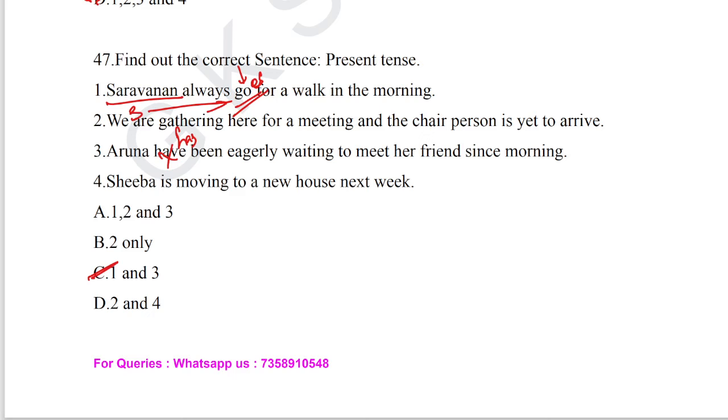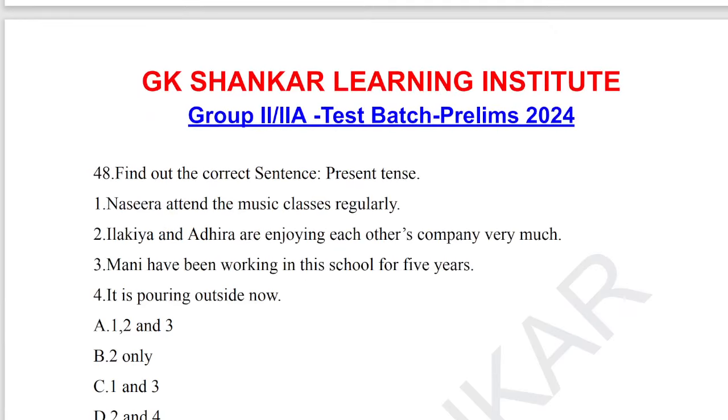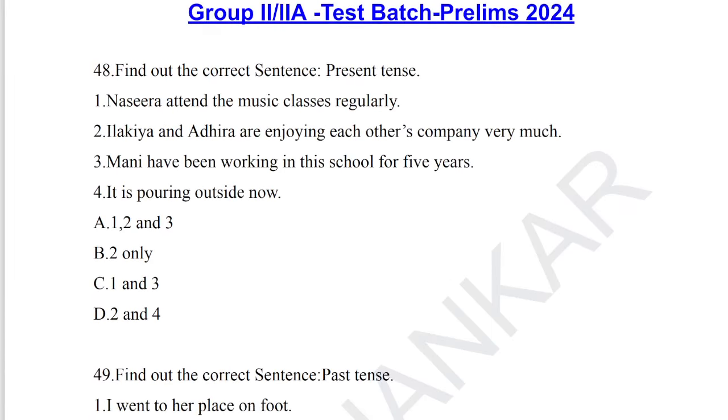Question number 47: find out the correct sentences. (1) 'Srimona always goes for a walk in the morning' — goes (does + go) is correct for singular subject. (2) 'We are gathering here for a meeting and the chairperson is yet to arrive' — correct. (3) 'Aruna has been eagerly waiting to meet her friend since morning' — correct. (4) 'Siva is moving to a new house next week' — correct. One and three are correct; option with one and three is the answer for question number 47.